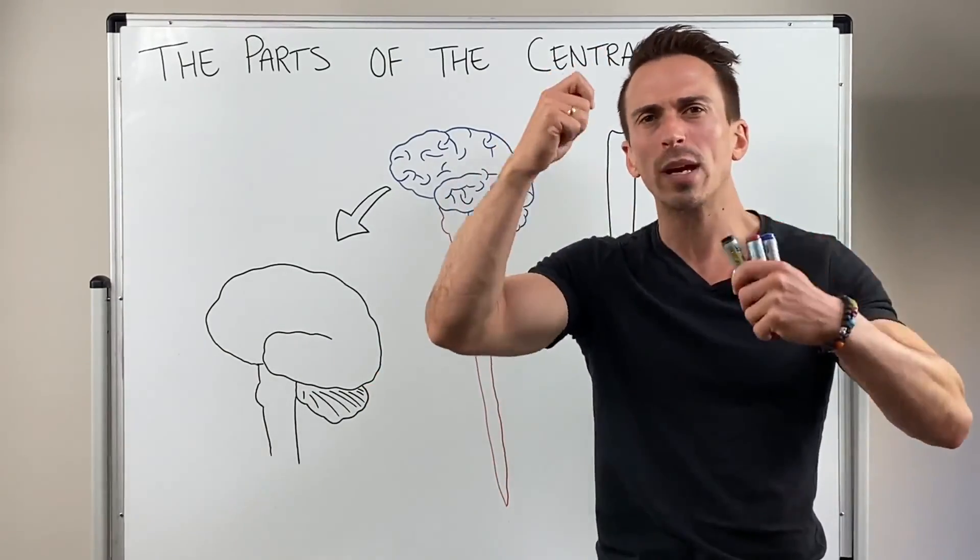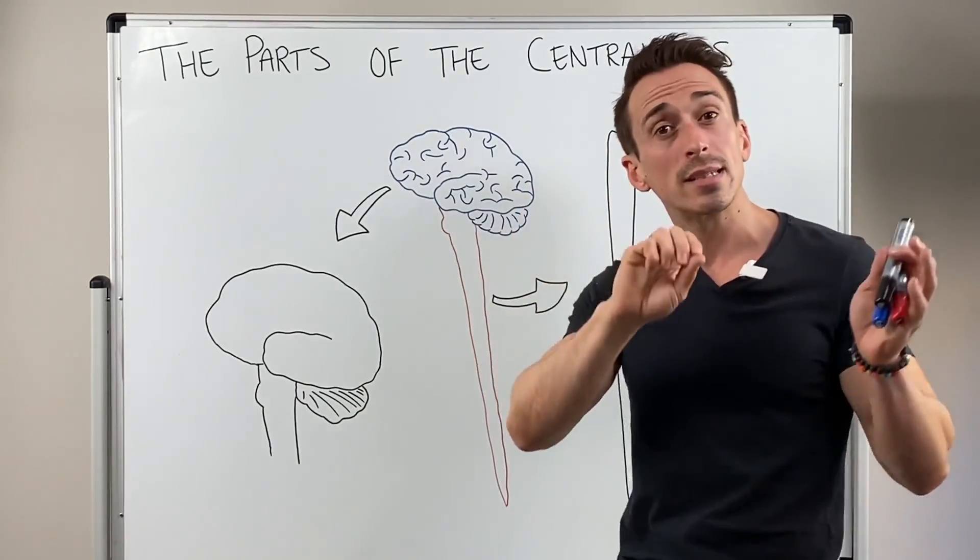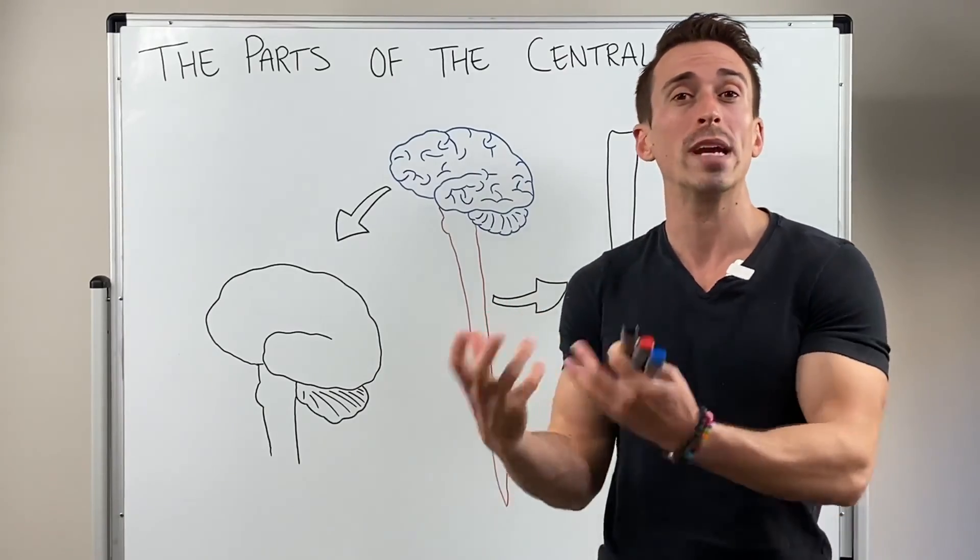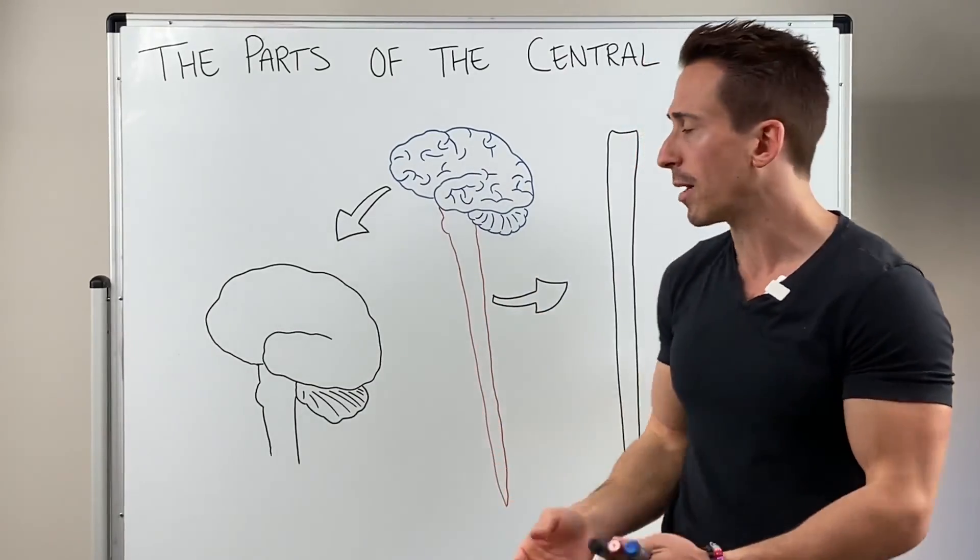We make a decision, we understand what's going on, and then we send a signal out to the various muscles, tissues, or glands of the body in order to have some sort of reaction to those stimuli that are coming in.